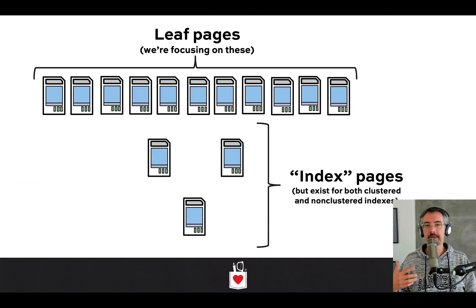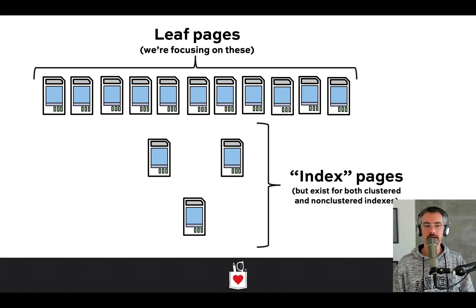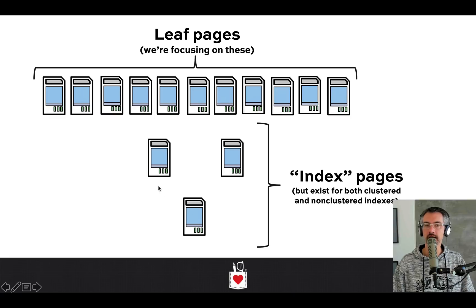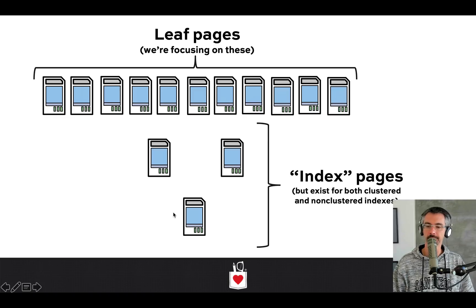As a side note for senior DBAs in the room: you may have heard of the concept of a B-tree, balance tree, or B-plus tree. Here we're going to specifically focus on the leaf pages of the index. There are also supporting trees that some people call index pages, but that is not what we're referring to today. We do go into those inside Mastering Index Tuning.